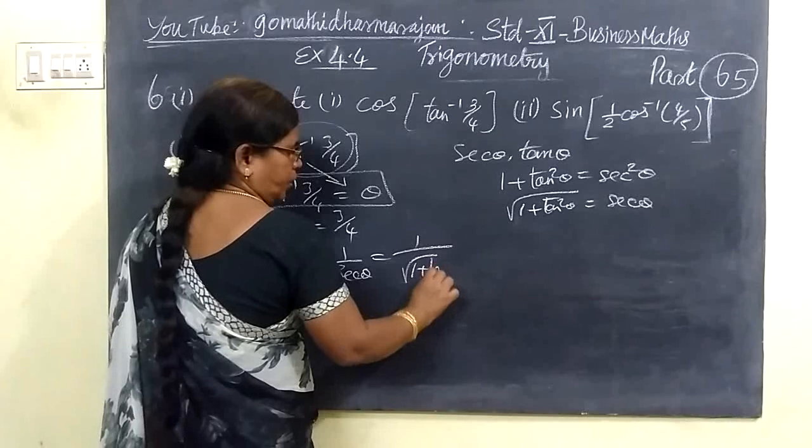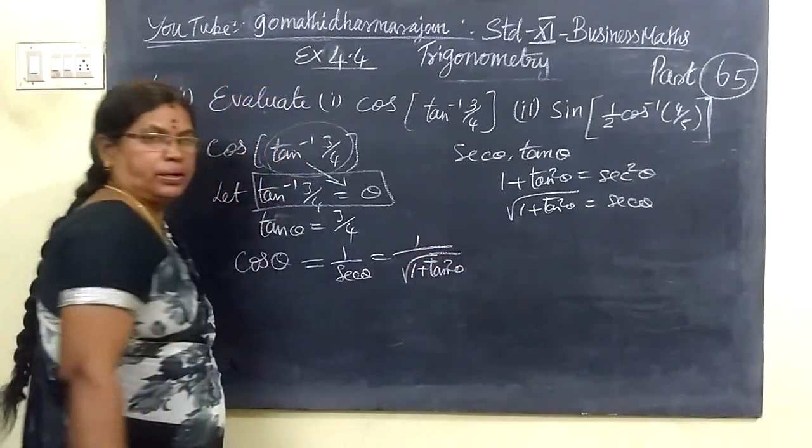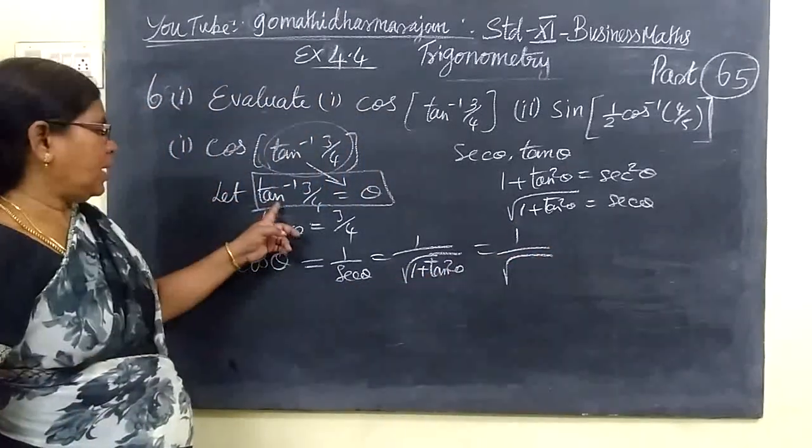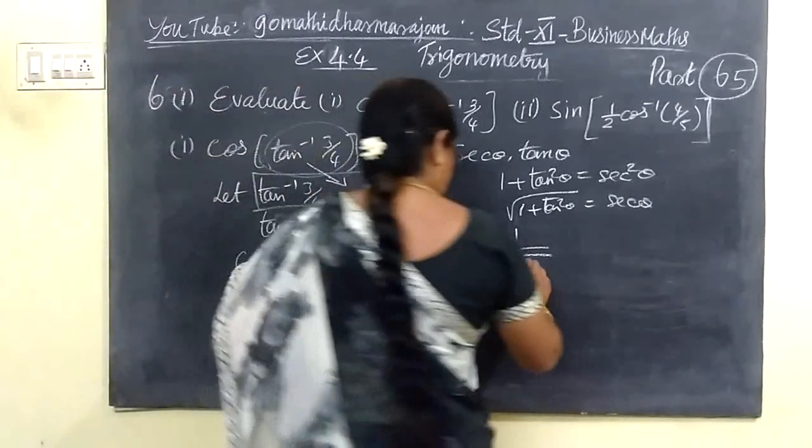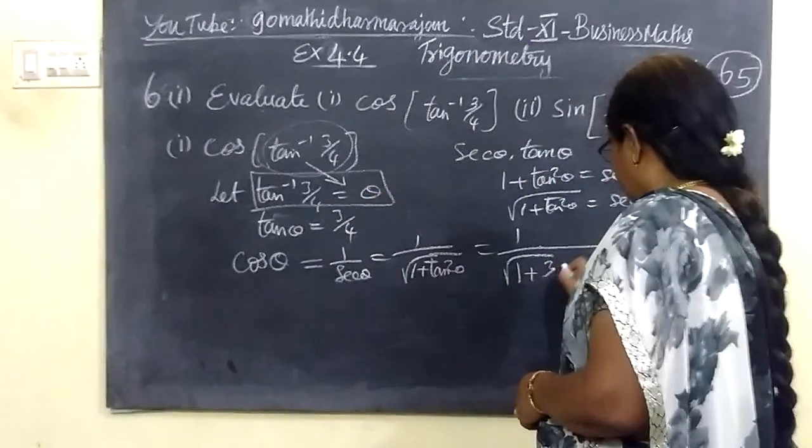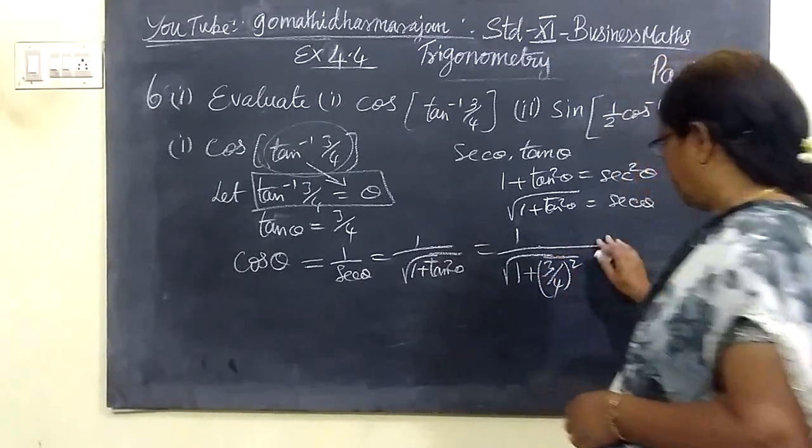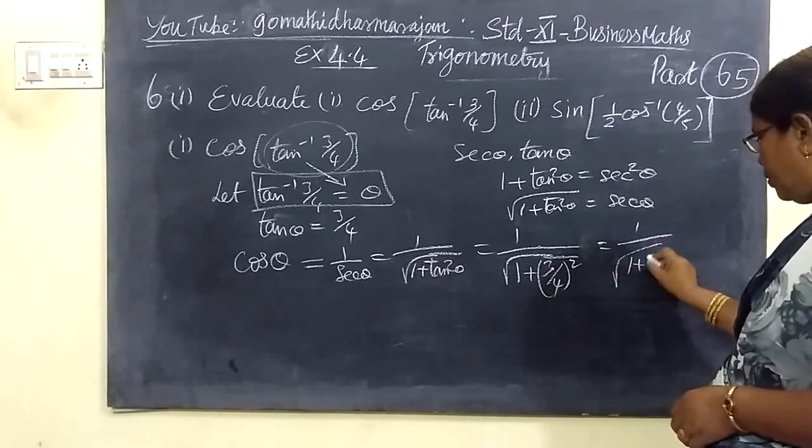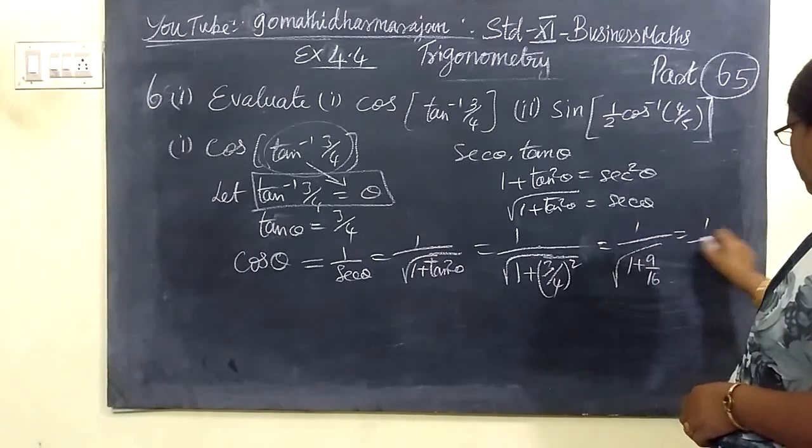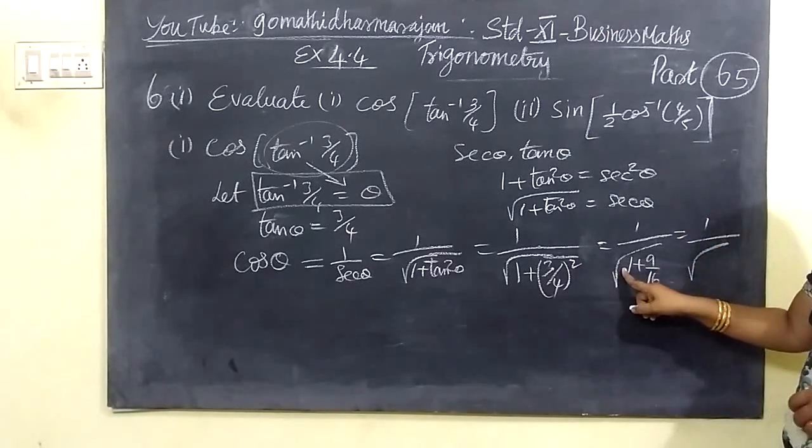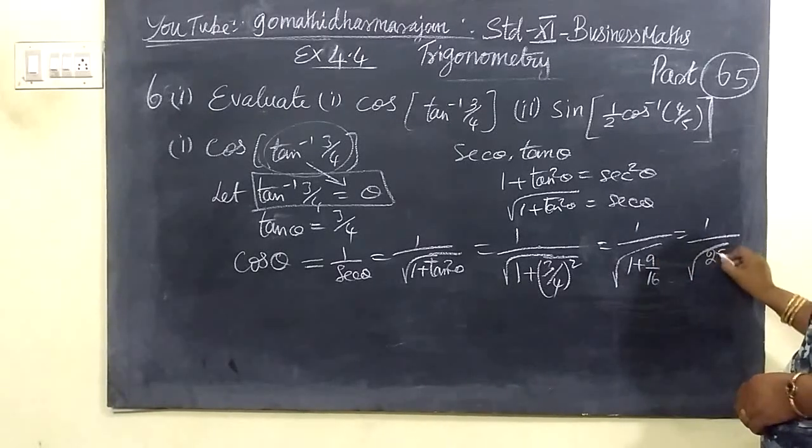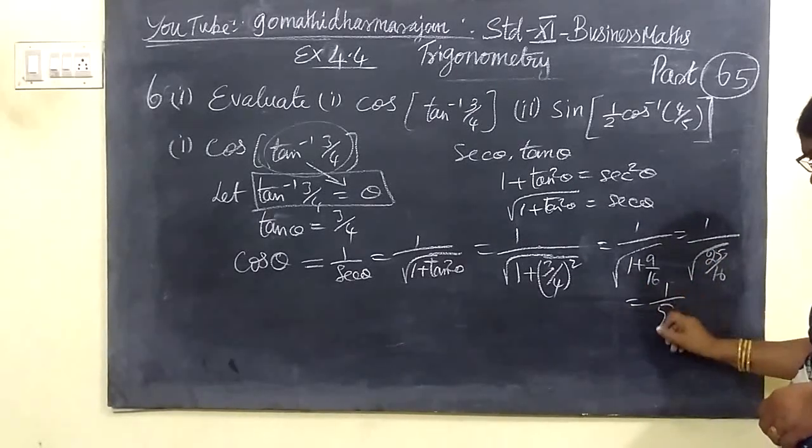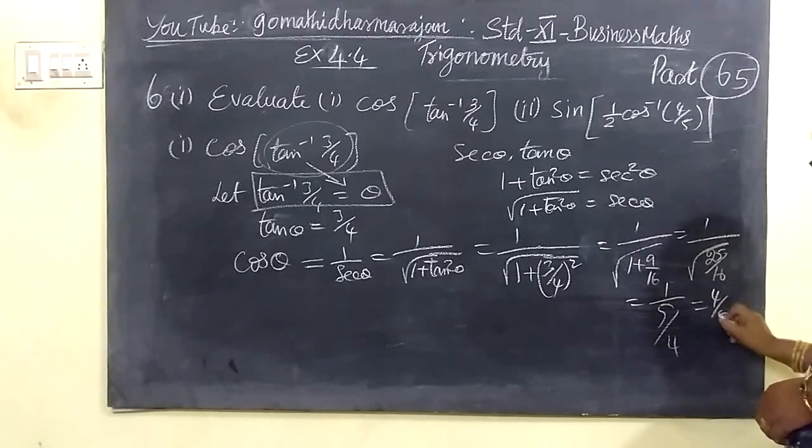We can see that sec theta equals the root of 1 plus tan squared theta. Now, equals 1 by root of - tan theta equals 3 by 4. So we are writing 1 plus 3 by 4 squared. This is nothing but 1 by root of 9 by 16. It equals 1 by root of 16 plus 9, which is 25. So 25 by 16 is root of 25 over 16, which equals 1 by 5 by 4, and this is equal to 4 by 5.